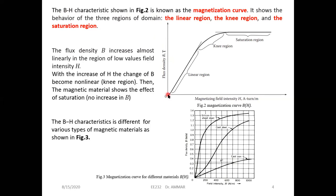At zero, the material is not magnetized. When we start to increase H, B will also increase. We can see from the expression B = μ × H that they are proportional. With the increase of H, B increases proportionally, and we call this the linear region.